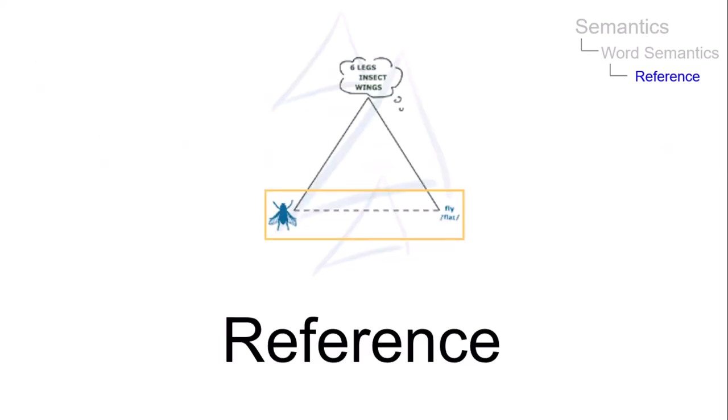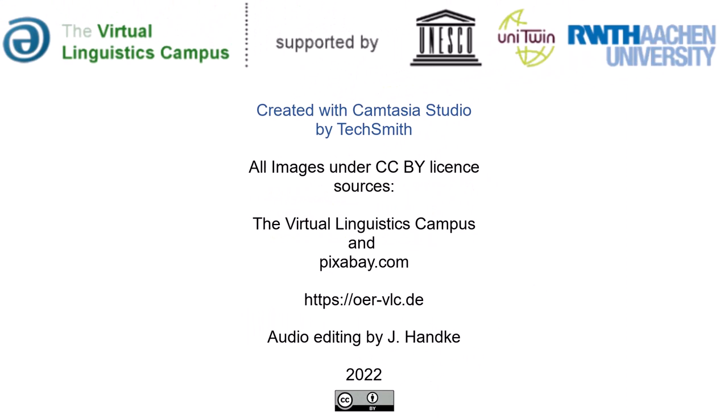In summary, the term reference labels the activity of picking out precise things or referents in the world on some specific occasion. It establishes a relationship between words, or more precisely lexemes, and real-world entities.